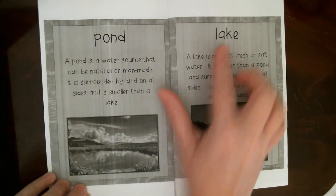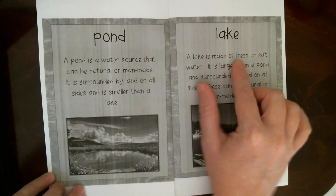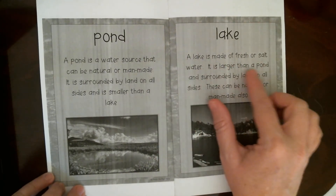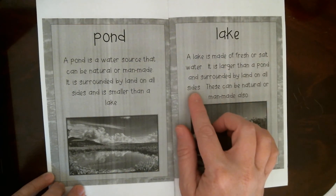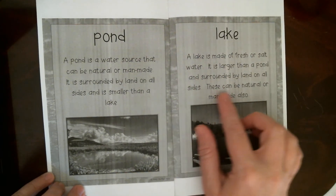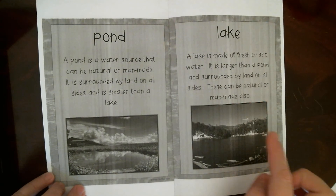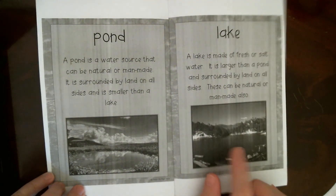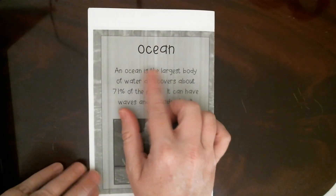A lake is made of fresh or salt water. It is larger than a pond and surrounded by land on all sides. Lakes can be natural or man-made. You can walk all the way around a lake, but it's a lot bigger than a pond.